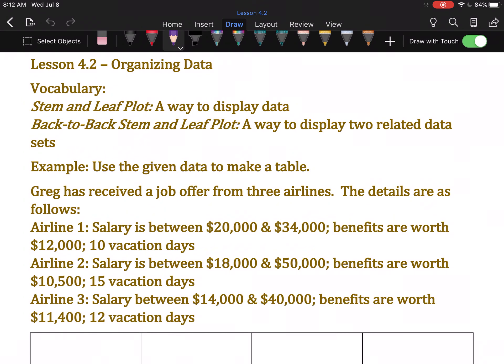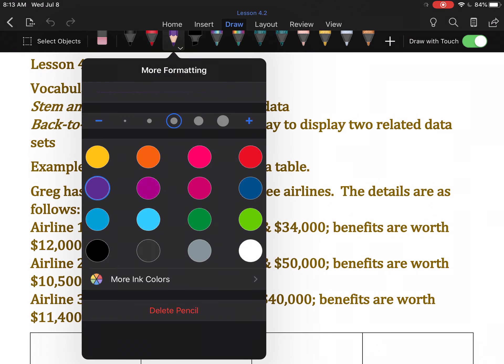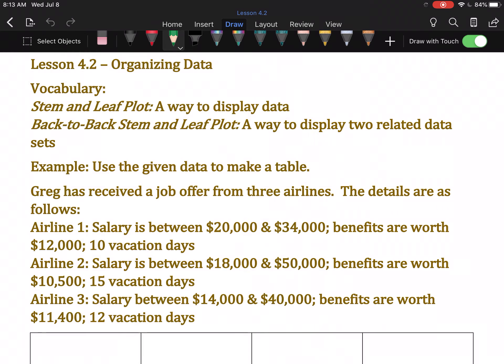So in chapter 4, we're actually going to be skipping some material and just doing about half of lesson 4.2. We'll do sections 3, 4, and 5 and call it a chapter. So 4.2 is called organizing data, and specifically we're going to talk about stem and leaf plots and back-to-back stem and leaf plots.